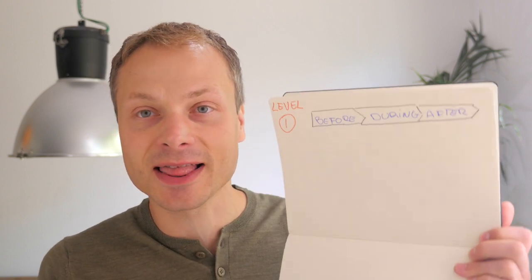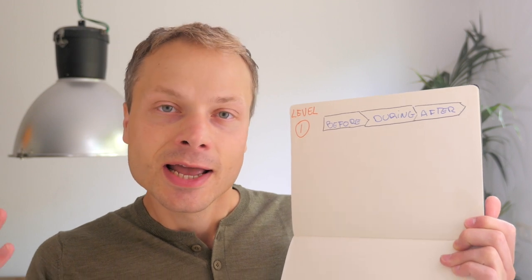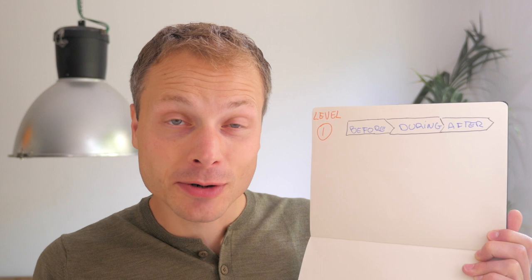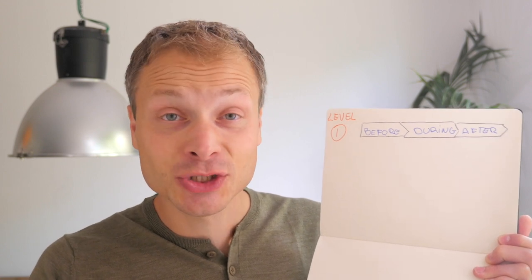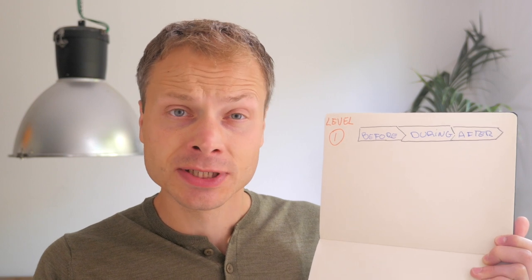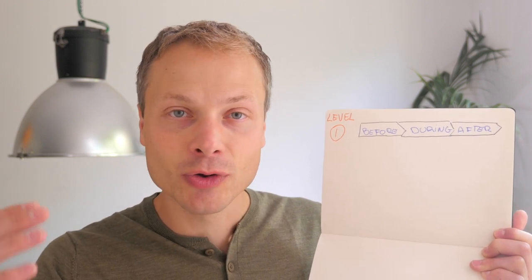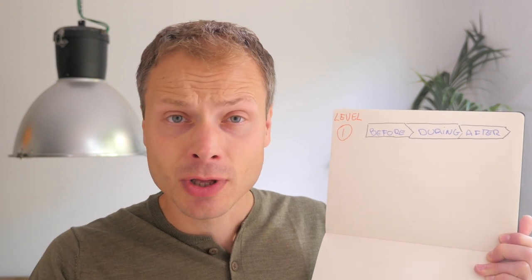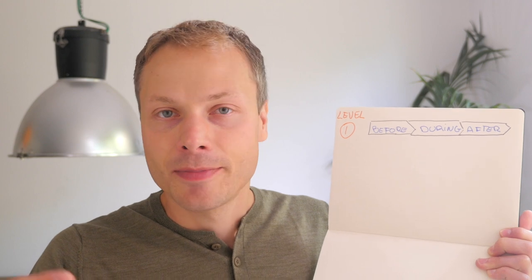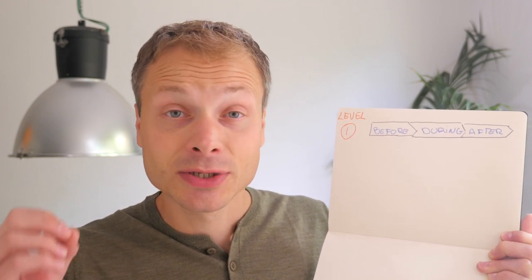To explain this framework, let's use a real-life scenario of doing groceries and look at the detail levels we can use to map this journey. On the top level — the highest level, let's call this level one — the journey would be something like: before doing the groceries, during doing the groceries in-store, and after the groceries. This is the highest level you can map the journey. Before, during, after is the most common structure, but there are other ones.